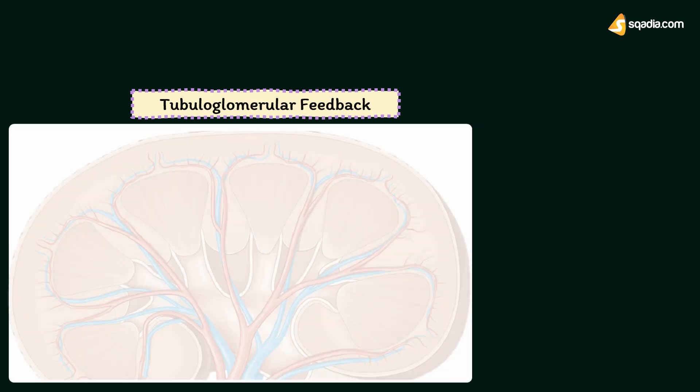Now let's discuss the tubuloglomerular feedback. Macula densa plays an important role in tubuloglomerular feedback, which controls renal blood flow and glomerular filtration rate. Tubuloglomerular feedback is the mechanism that regulates glomerular filtration rate through the renal tubule and macula densa.